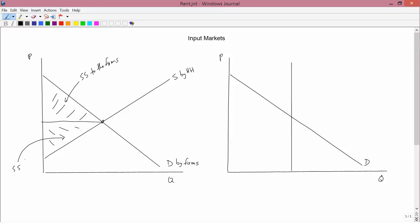And so this is social surplus to the households. HH is an abbreviation for household. In other words, to the input suppliers.